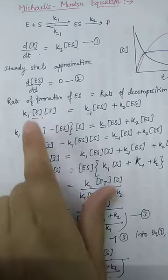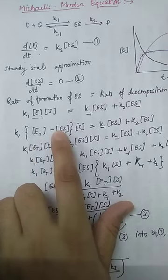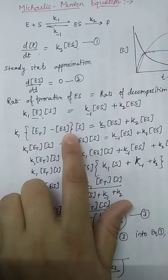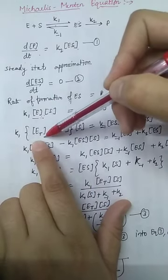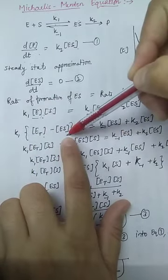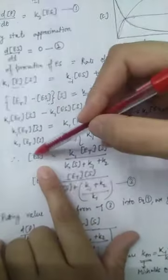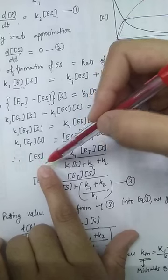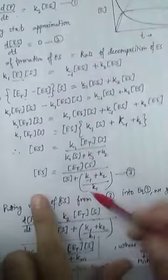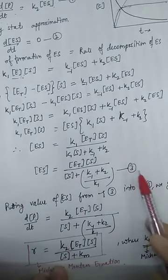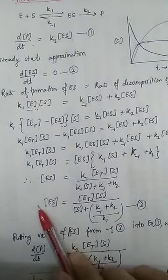Here E represents the free enzyme concentration. The free enzyme concentration is equal to the total enzyme concentration minus the enzyme-substrate complex concentration. Substituting this in place of the free enzyme concentration and doing the mathematics, we find the enzyme-substrate complex concentration in terms of total enzyme concentration, substrate concentration, and the rate constants.